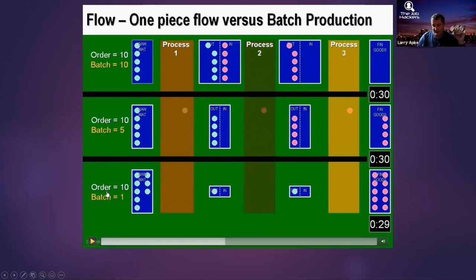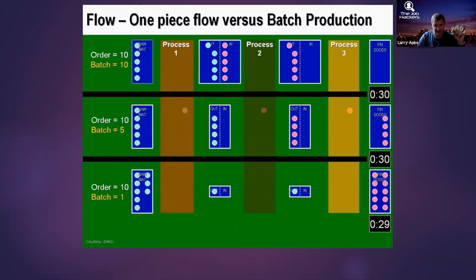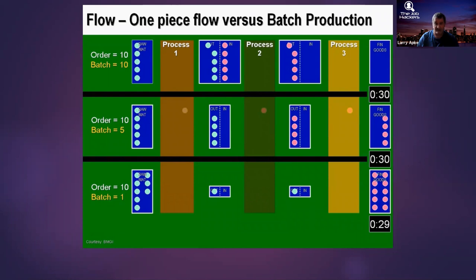Here's the counterintuitive part: I kind of understand that if I'm only moving one piece through, that one piece will move through sooner. But I have a whole payload of 10 items — what happens? In the one-piece flow condition, I've actually delivered all 10 of those items just by changing the batch size. It's almost magical.